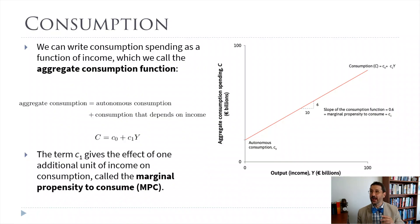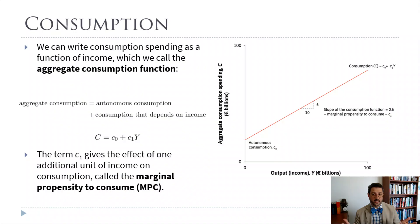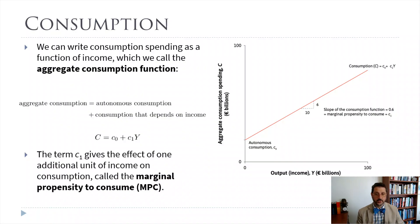The question is: how does consumer spending relate to output? We know that output and income are the same. A reasonable assumption is that there's some amount of spending you have to do regardless of your income — at least regardless of the country's income. We'll call that autonomous consumption and label it C0. Then for every extra dollar of income you get, you spend more. Our consumption function C is equal to C0 — that's our autonomous consumption — plus some marginal propensity to consume times income, total income, or GDP, or Y.